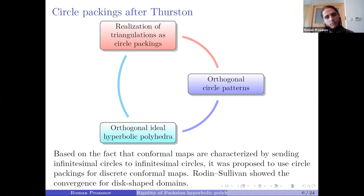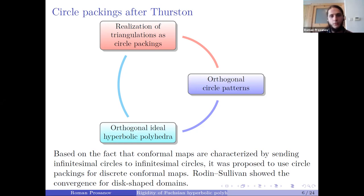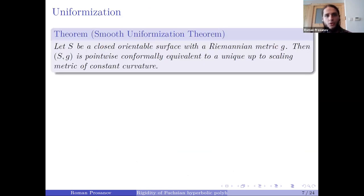The discretization of conformality via circle packings turned out to be very fruitful — it suits well to discretization of some aspects of conformal geometry, but not all of them. For me, one of the main highlights of smooth conformal geometry in dimension two is the uniformization theorem. Stated in a metric way: if I have a closed orientable surface with a Riemannian metric, then the uniformization theorem states it is pointwise conformally equivalent to a unique up-to-scaling metric of constant curvature, where the sign of curvature equals the sign of the Euler characteristic of the surface.